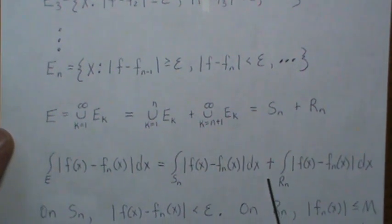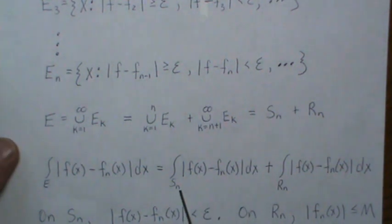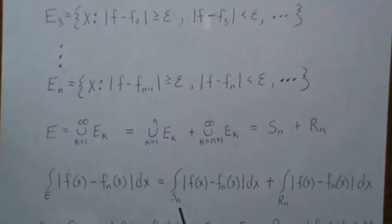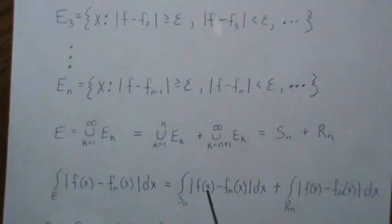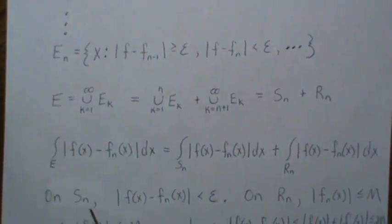So now one note on S_N. So that's the union of all these E's, these sets, disjoint sets. Then it says that this function is less than epsilon. That's part of that definition of that region.